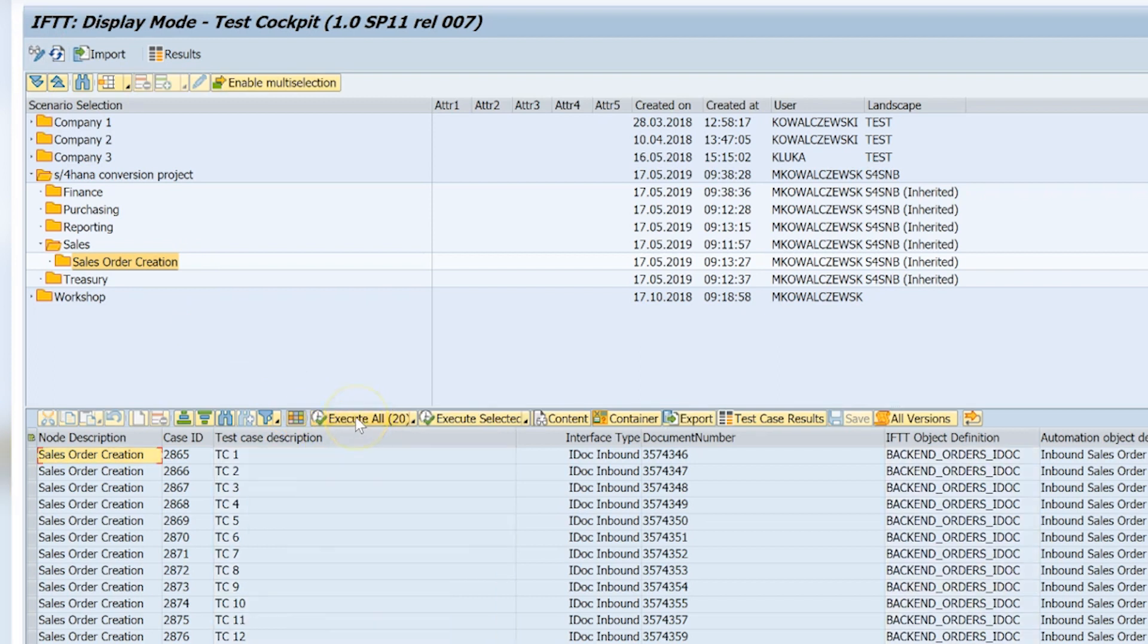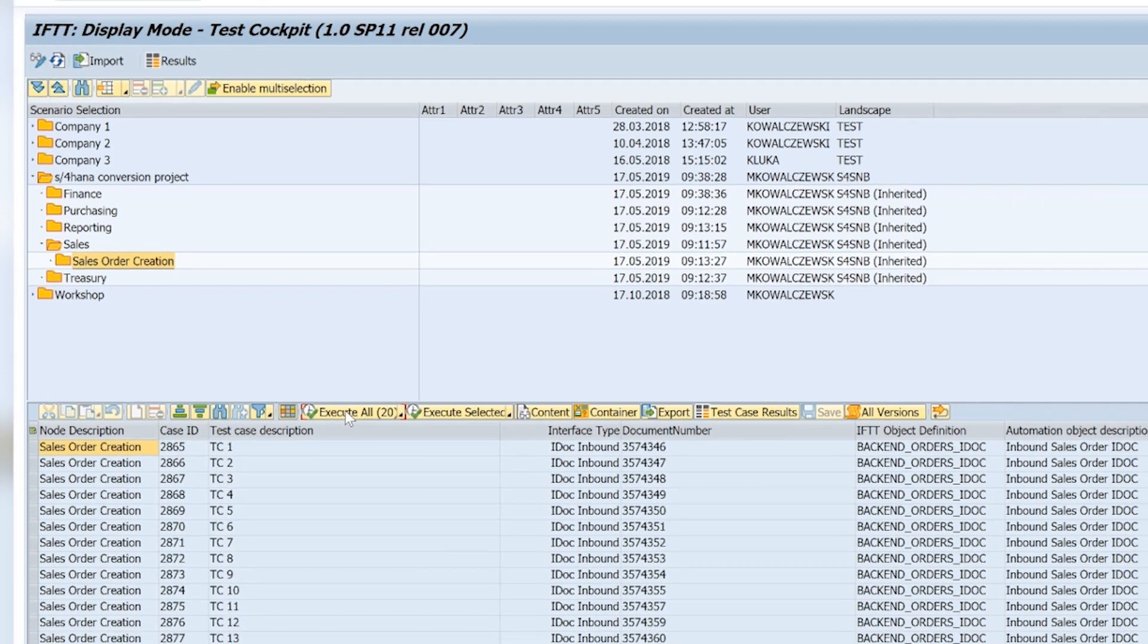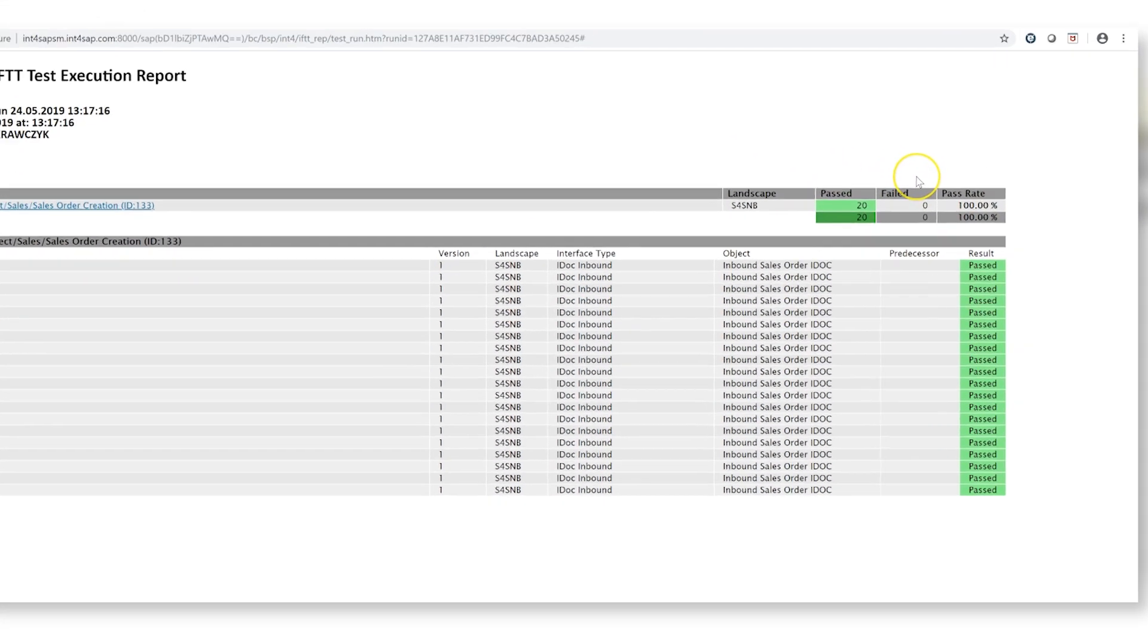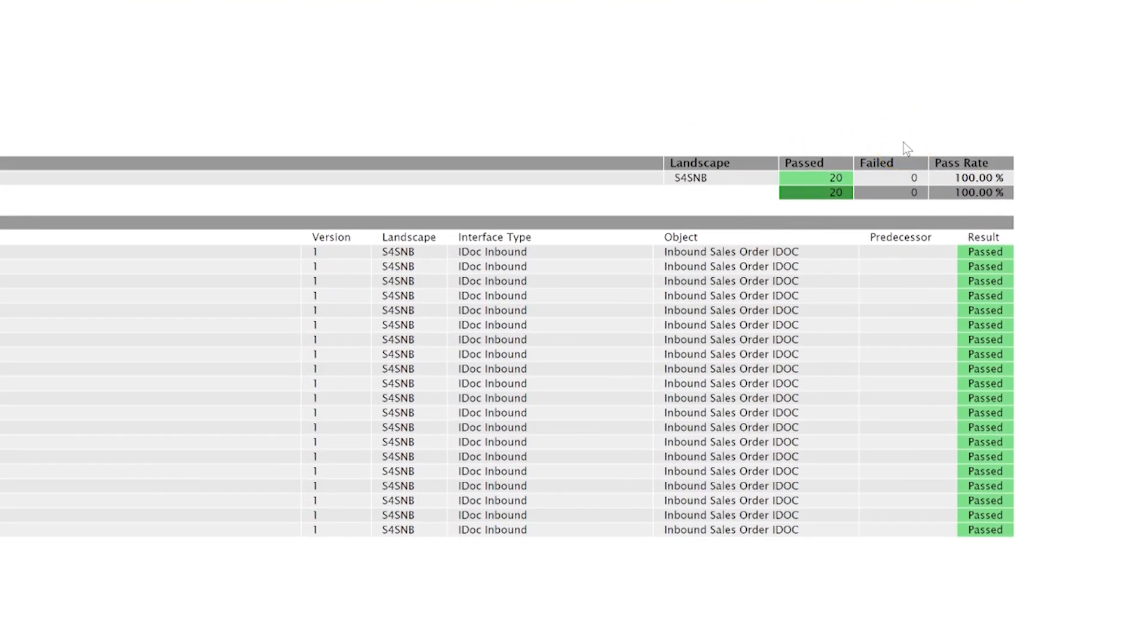In the next step, we need to run all 20 test cases. During the run, INT4IFTT will take the reference IDOC and reprocess them once more. After that, it will compare the reference sales orders created before the S4HANA conversion with the new sales orders created after the S4HANA conversion.